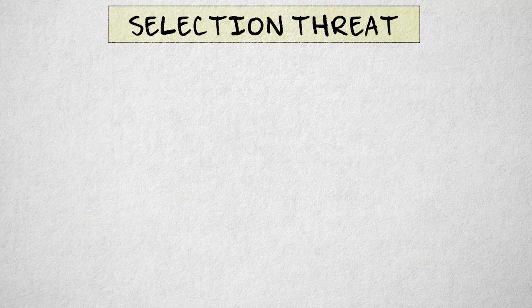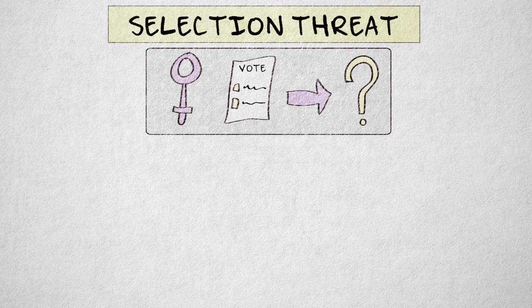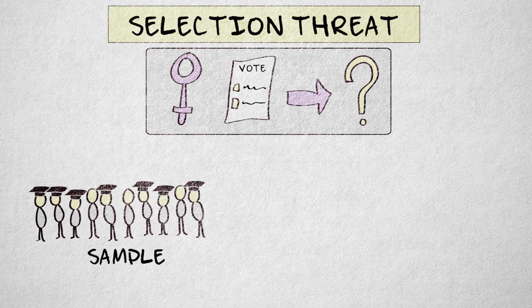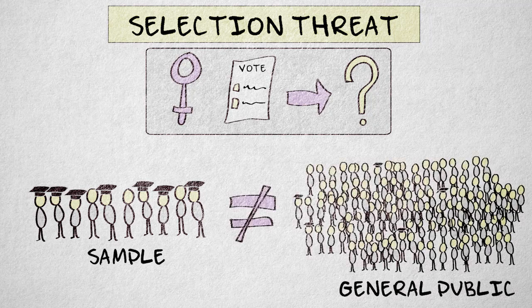Another example: suppose we want to know people's opinion on women's right to vote, and we interview people on a university campus. The sample is now so selective that it's highly unlikely that results will generalize to the general public's opinion.